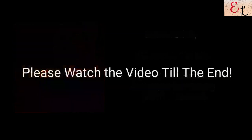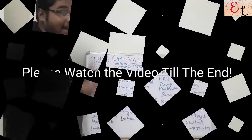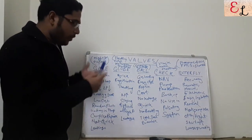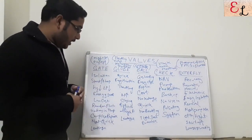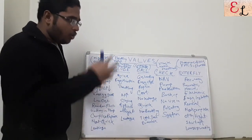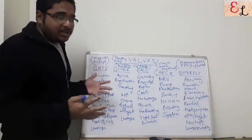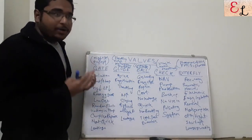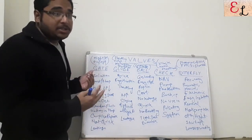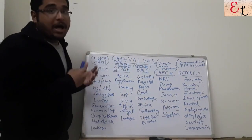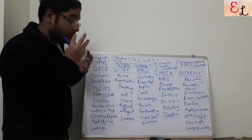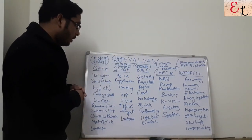We are going to talk about how valves are used in the industry — where and how they are used, also in our households, for which purpose each valve is used. We are going to talk about the specifications of all the valves: their advantages and disadvantages. This topic is very important because everywhere, in your household or in the industry, there is always piping, and whenever there is piping there are control valves.